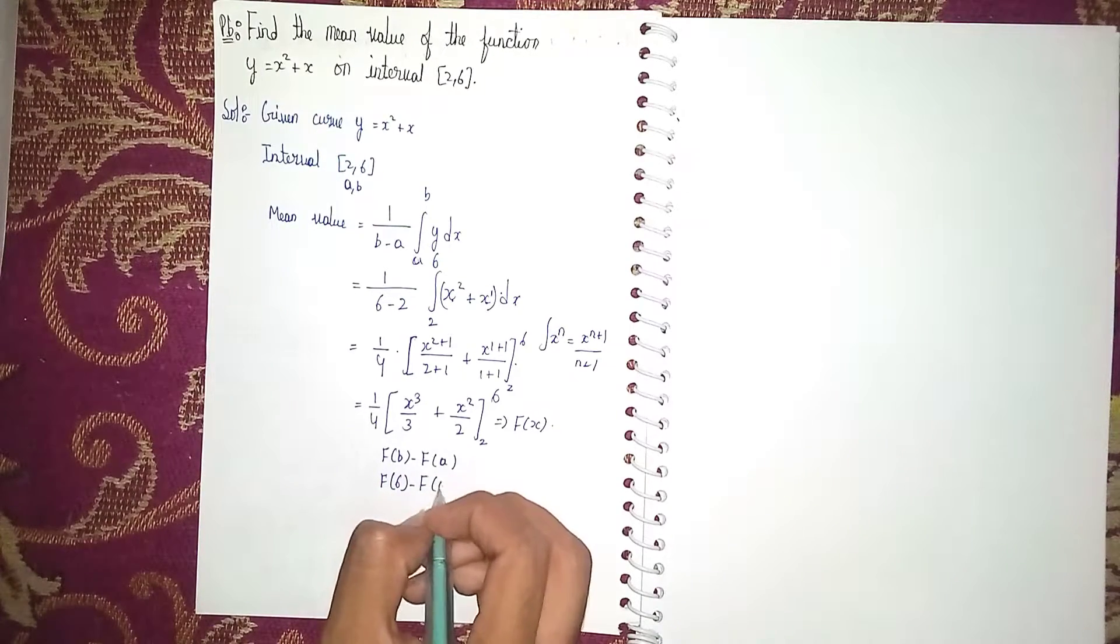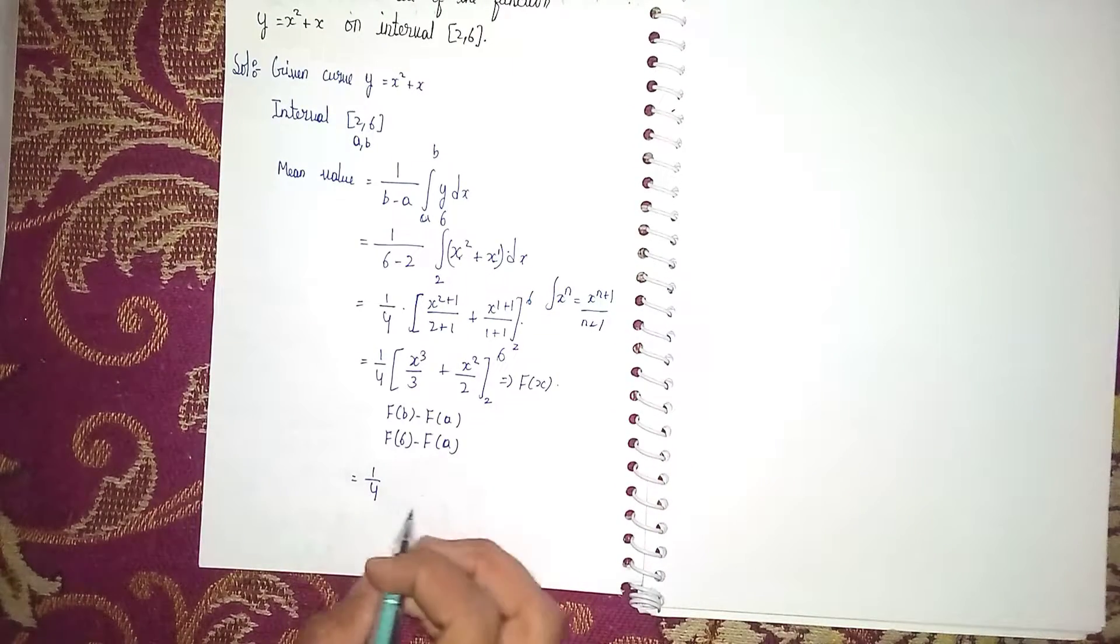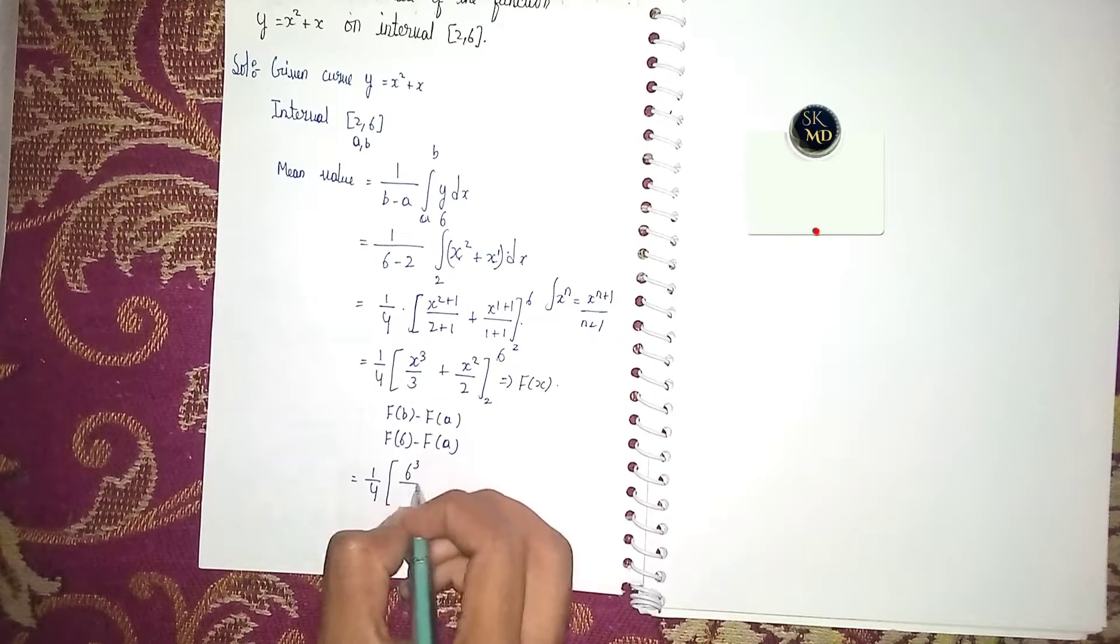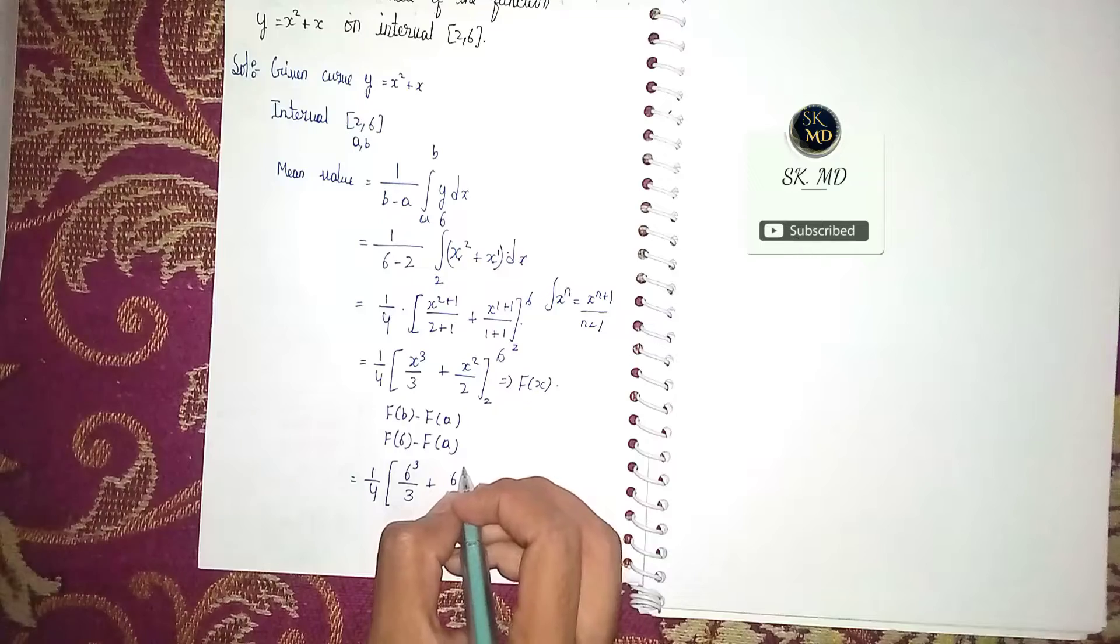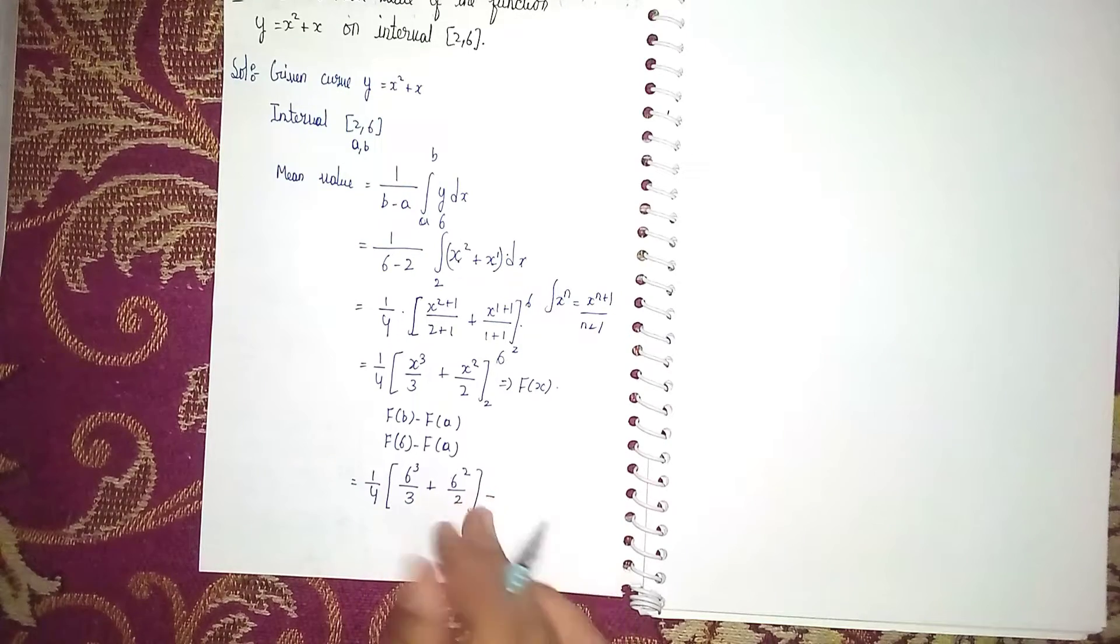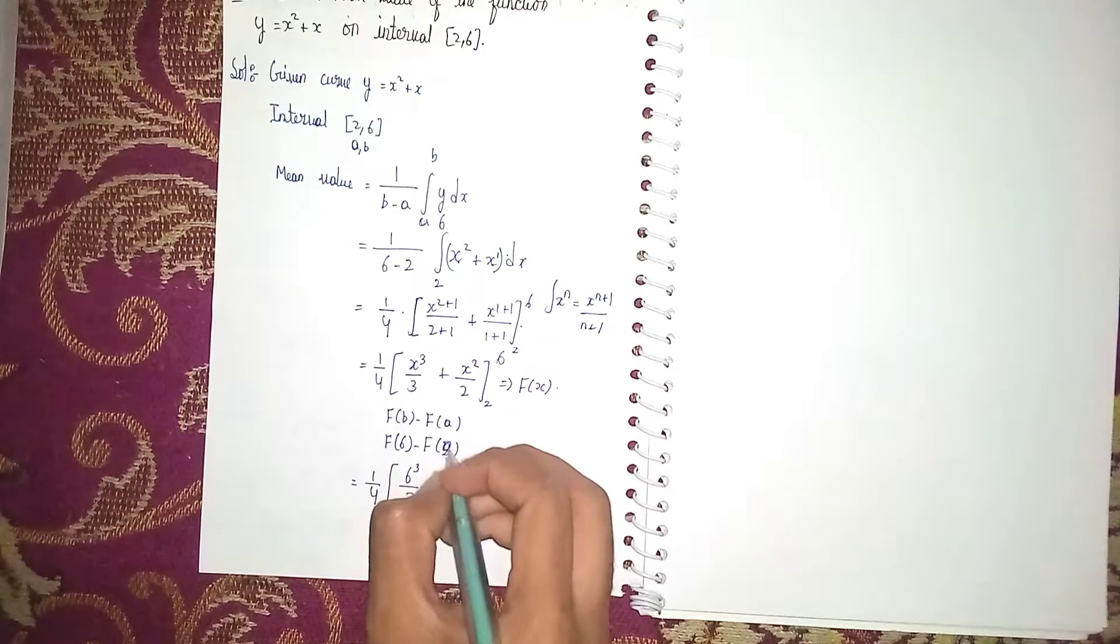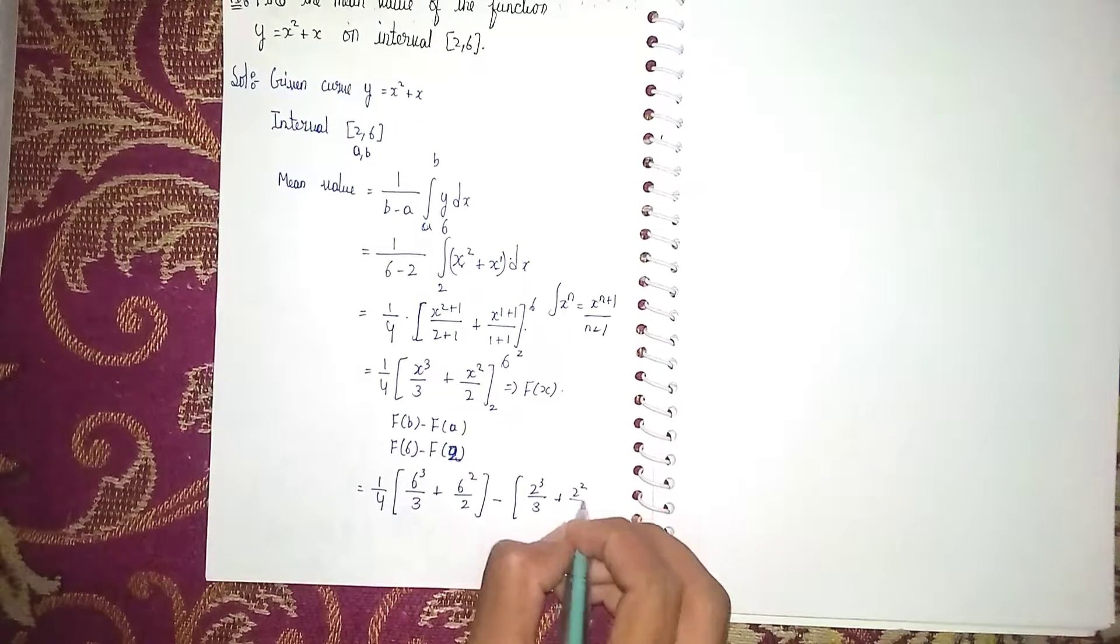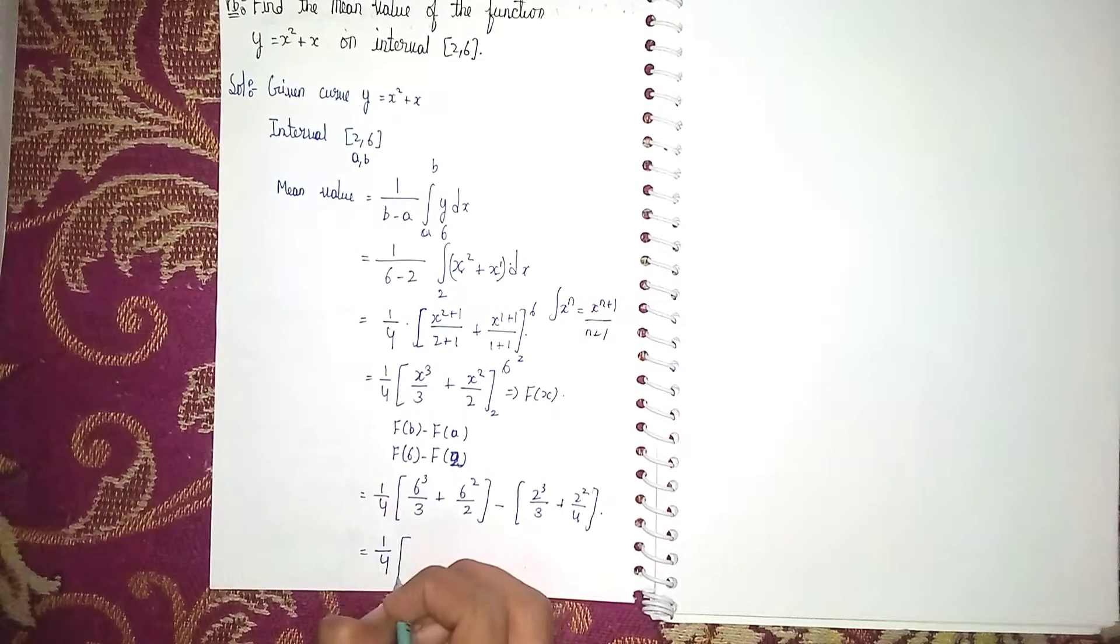Now apply the limits: 1/4 × [(6³/3 + 6²/2) - (2³/3 + 2²/2)].